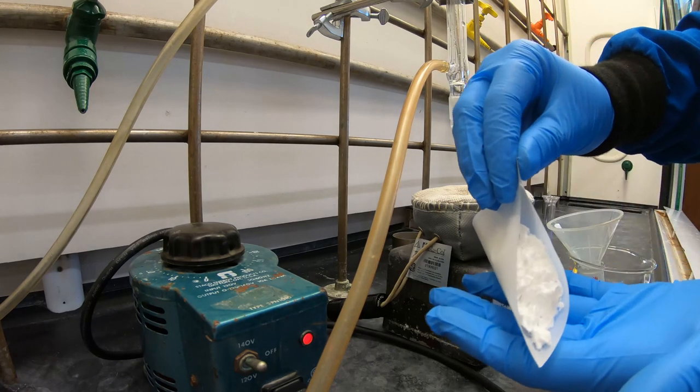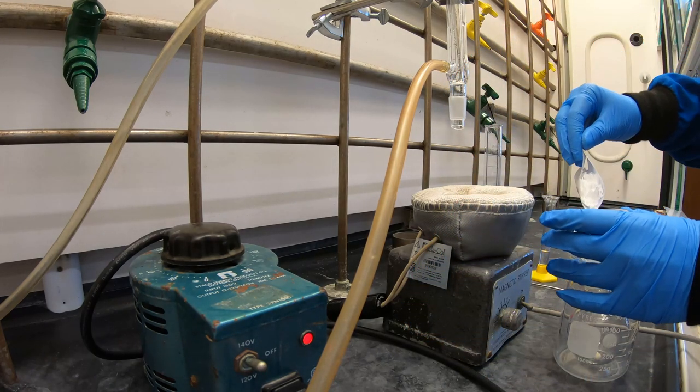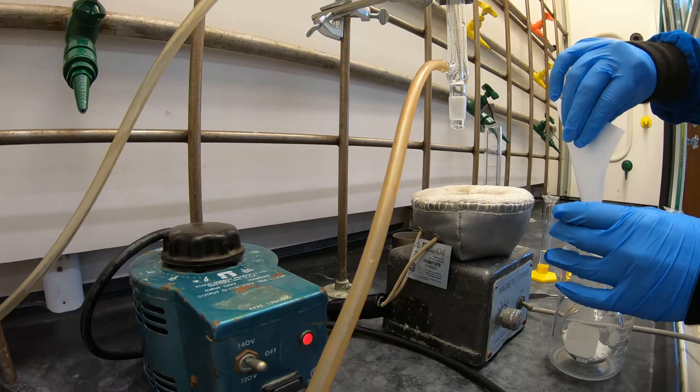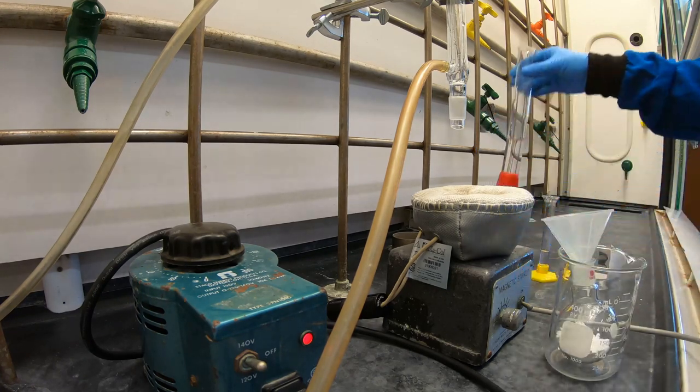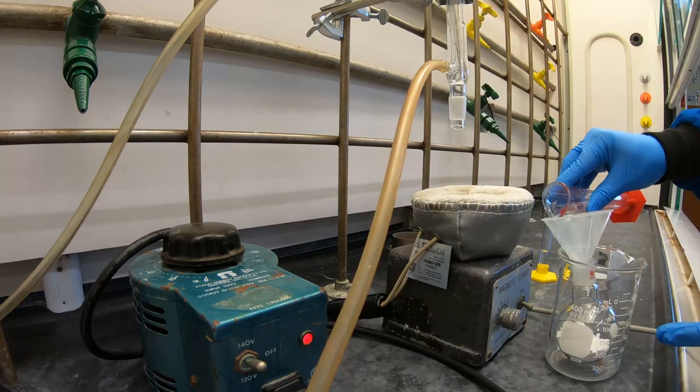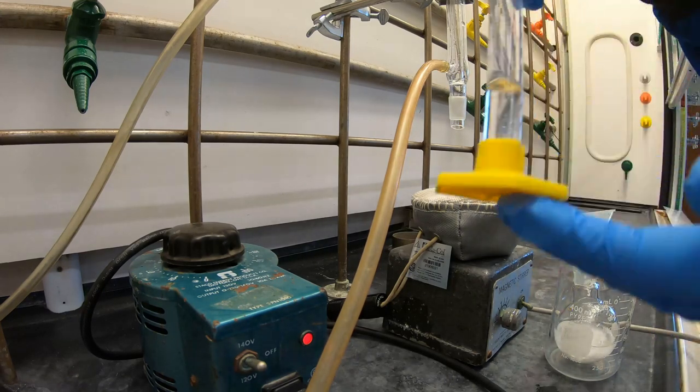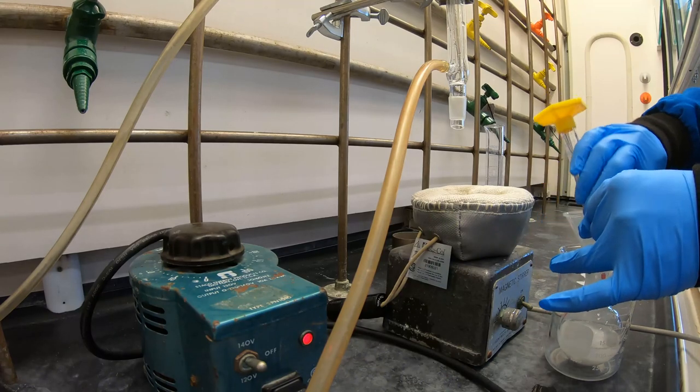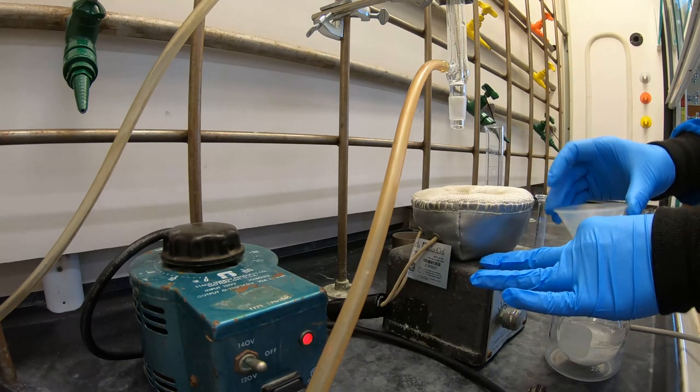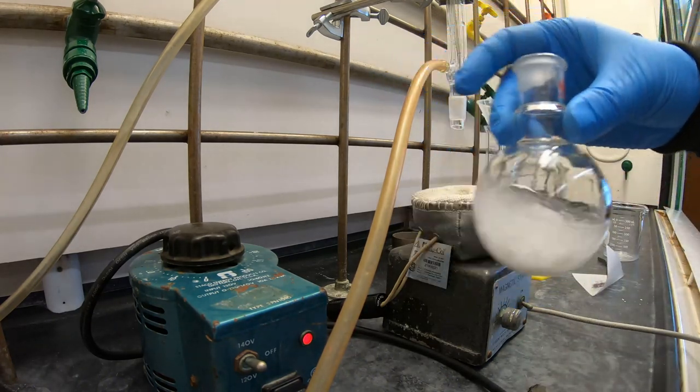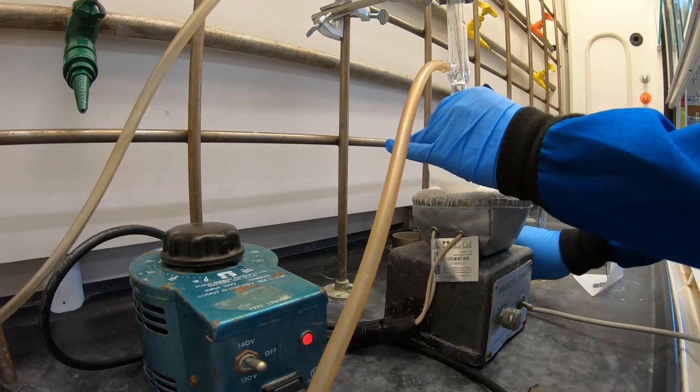To a 100ml round bottom flask, add your alpha chloroacetyl-2,6-dimethylacetanilide that you made last week. Follow this by adding 45ml of toluene. Then add 3 moles of diethylamine per mole of your acetanilide product. Make sure you have a stir bar in your round bottom flask. Then connect it to your reflux condenser.